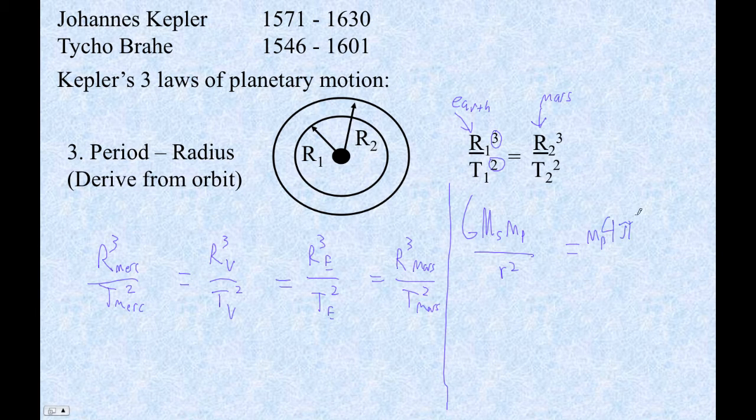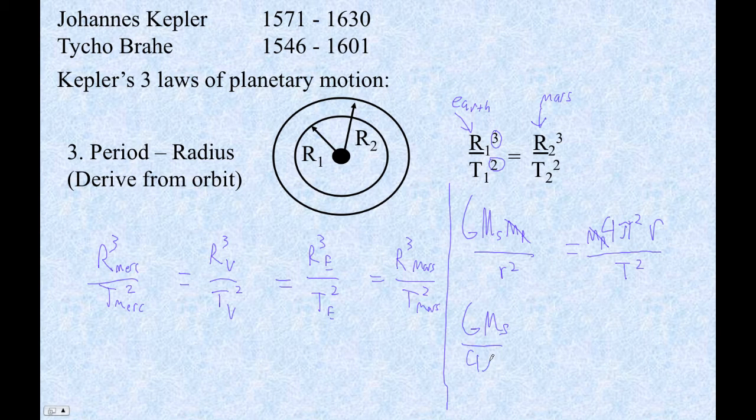Times 4π² radius divided by t squared. We can cancel the mass of the planet, and then if we move the 4π² down here and the r² up there, we get G times mass of the sun over 4π² is equal to r³ over t².